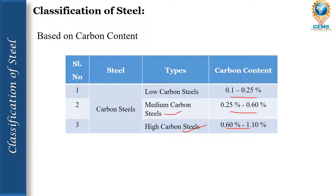Low carbon steels are called mild steels, designated as FE 250. We use mild steel in RCC construction as reinforcement material, or as structural steel sections in steel building construction. Medium carbon steels are used in rails and high tensile steels, mostly designated as FE 415. High carbon steels are used to produce stone masonry tools, drills, and punches because they have high hardness and cannot be easily broken.